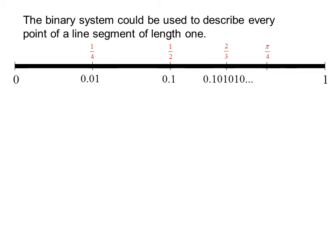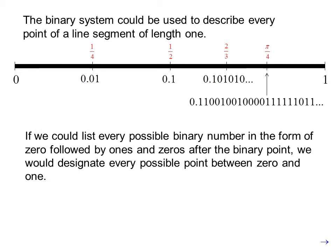Pi over 4 is approximately 0.1100100100111111011, and it keeps going, just like in the decimal system. Pi is non-repeating and non-terminating, so pi over 4 would also be non-repeating and non-terminating. If we could list every possible binary number in the form of 0 followed by 1s and 0s after the binary point, we would designate every possible point between 0 and 1.